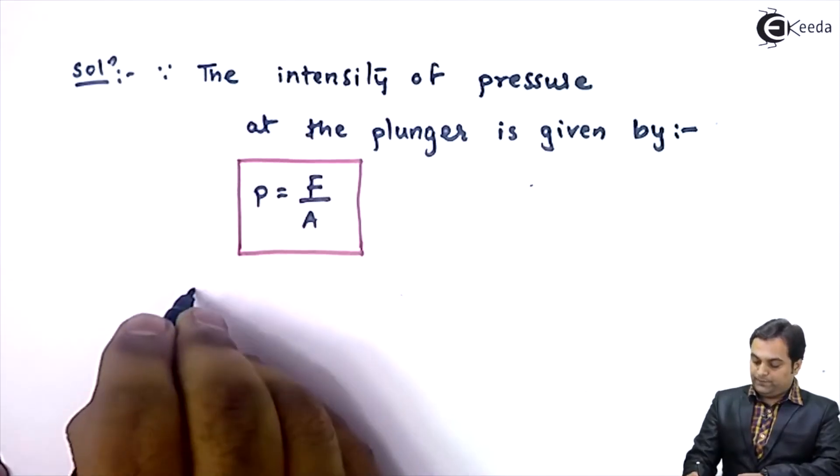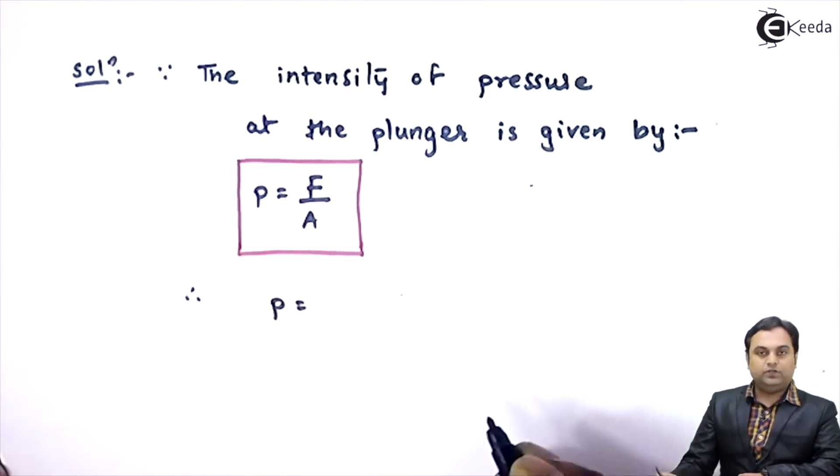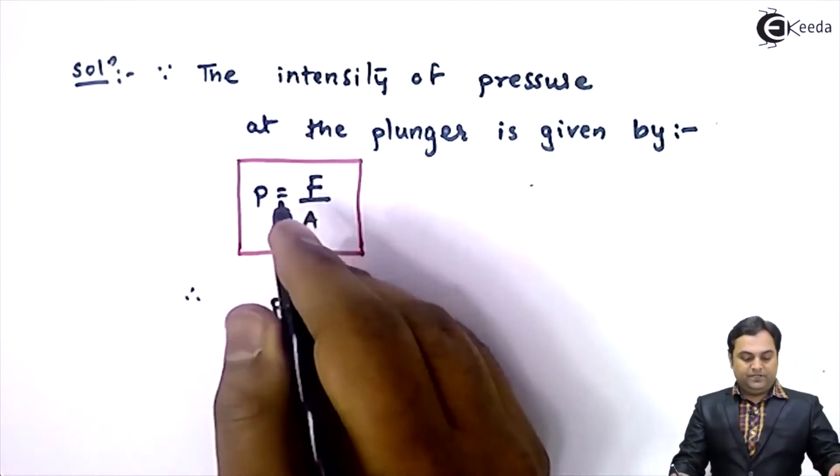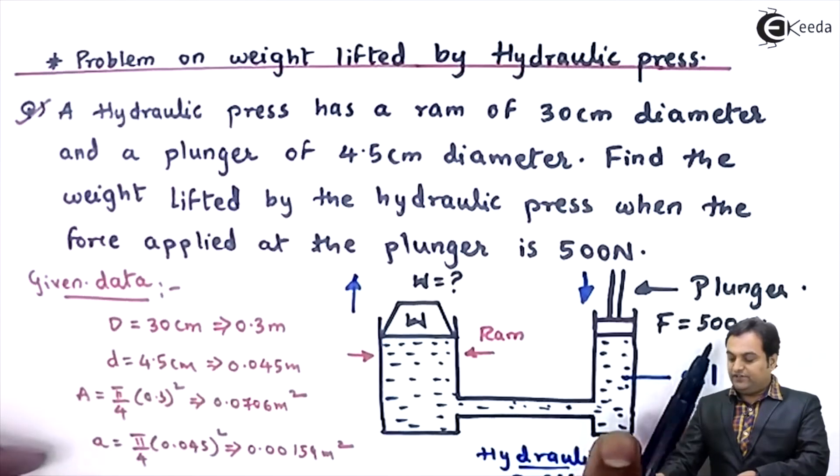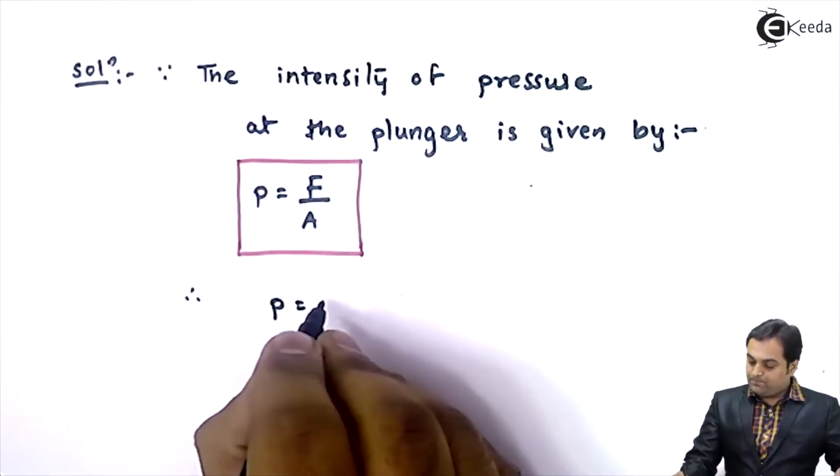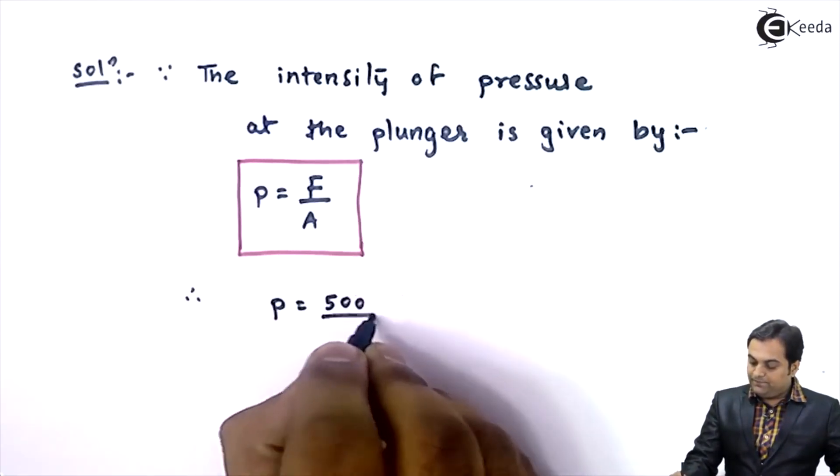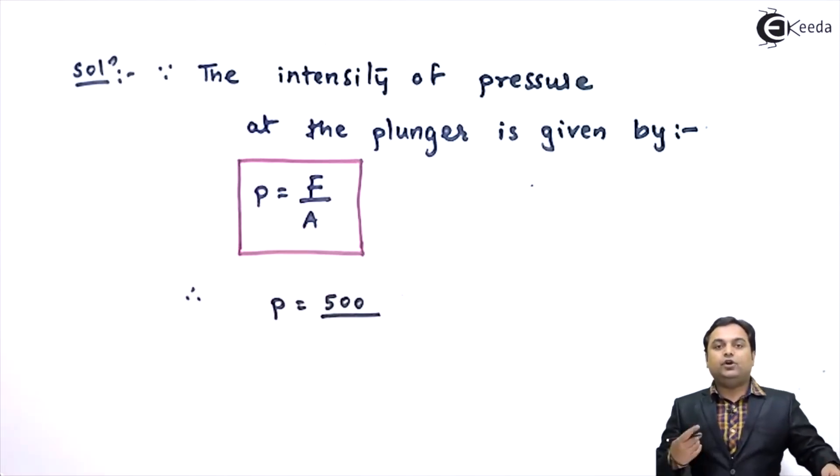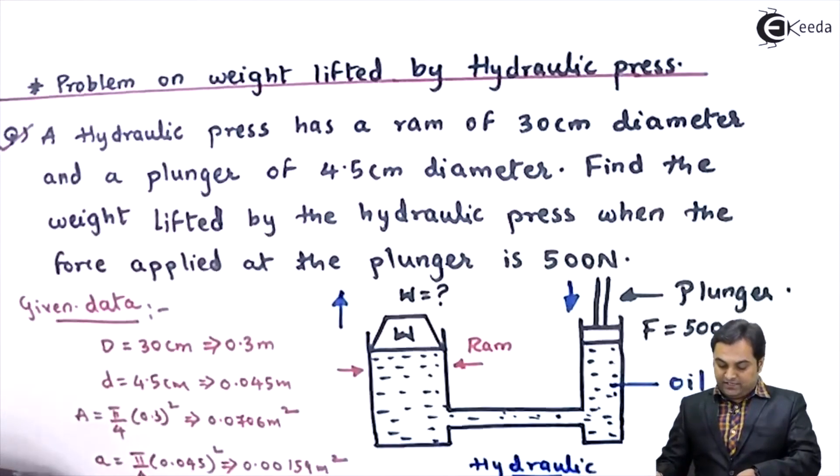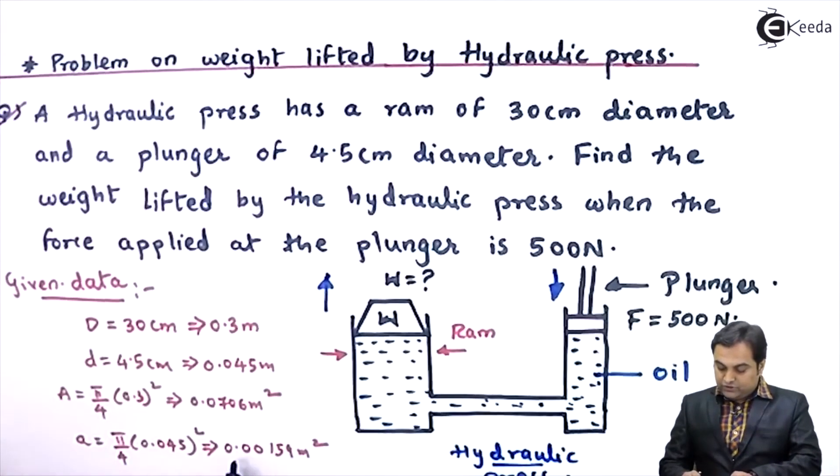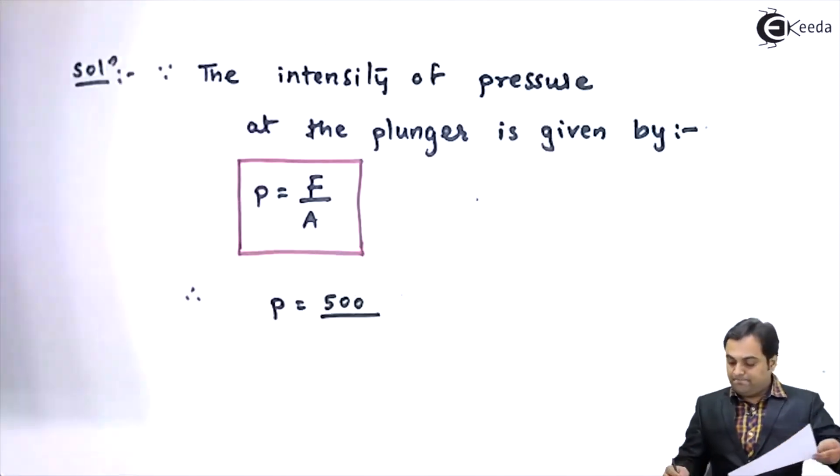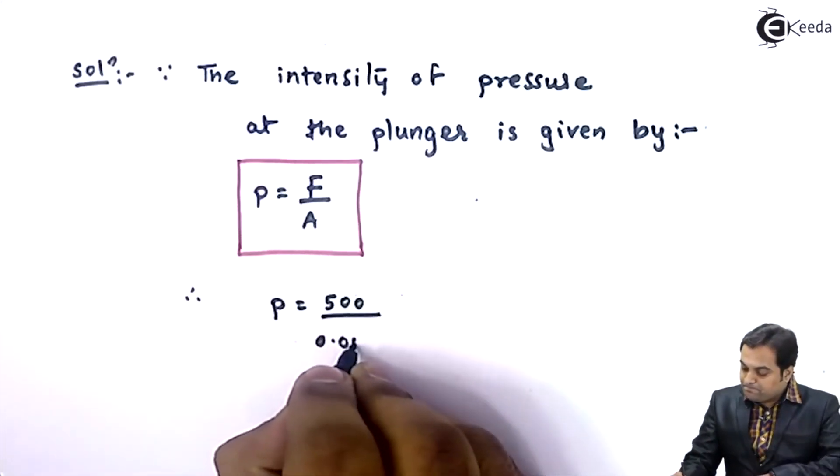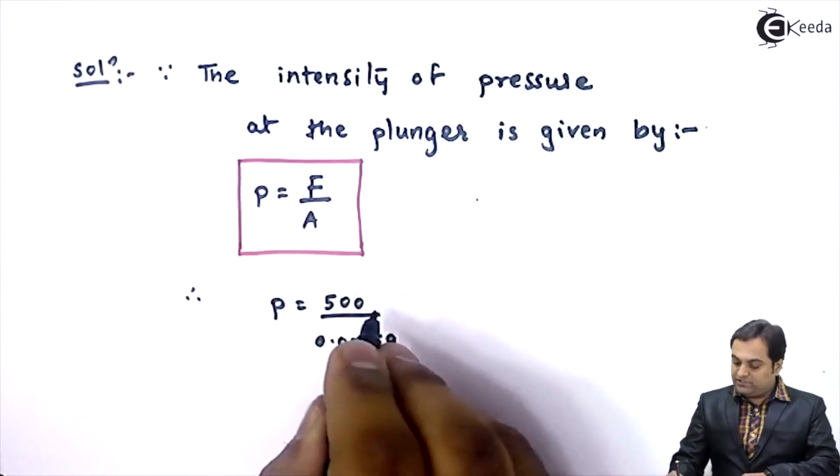So therefore, small p it will be equal to force at the plunger, that is given as 500 newton, divided by here a indicates area of the plunger, and this area that is 0.00159 meter square.